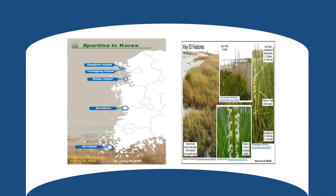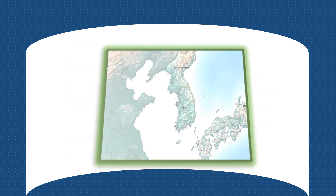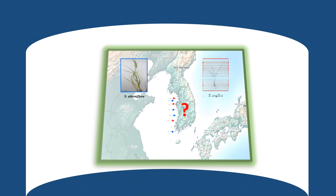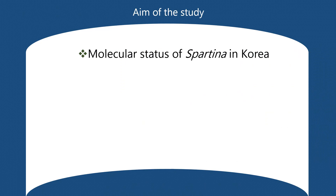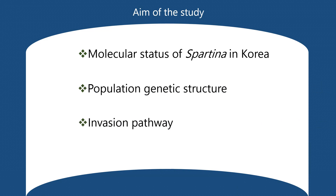In Korea, the geographical distribution of the Spartina species has been determined and the species were identified using morphological features. However, the genetic structure and the invasion pathway of these species are unknown. Moreover, the species were only identified using morphological characteristics, and no molecular identification was conducted on these species invading Korean coasts. However, correct identification and information on the origin and invasion history of each invasive species is essential for preventing its further spread. Therefore, our aim in the present study is to identify these species using molecular methods, investigate population genetic structure, and determine their invasion pathway.